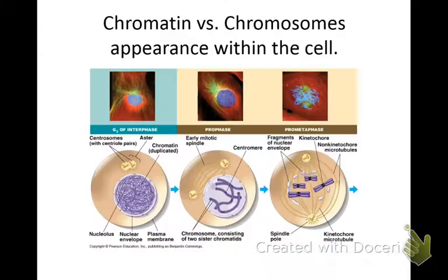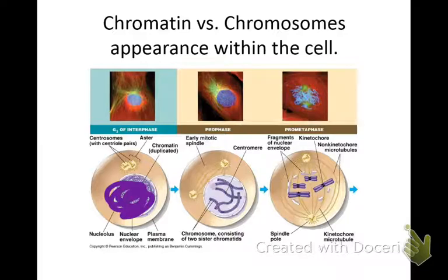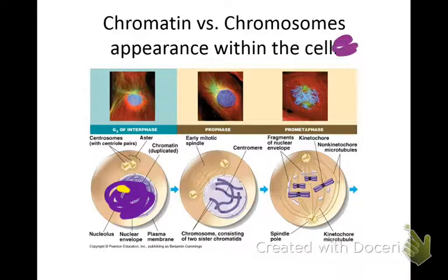DNA is the blueprint — the recipe for how to make proteins. There are two different states of DNA. Chromatin looks like spaghetti and meatballs, all jumbled up — it's loose DNA. A cell can move the loose DNA around to find a certain gene, and genes are just segments of DNA. Chromosomes are the same DNA but tightly coiled. Chromatin all the time; chromosomes just when the cell is dividing.